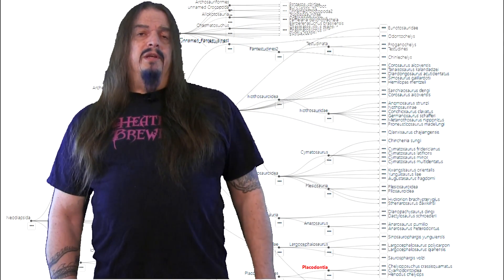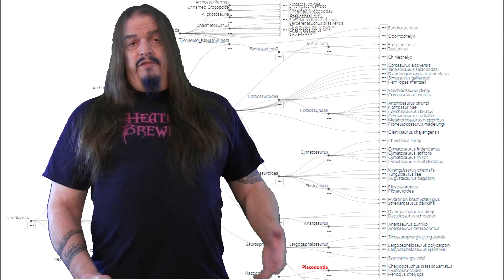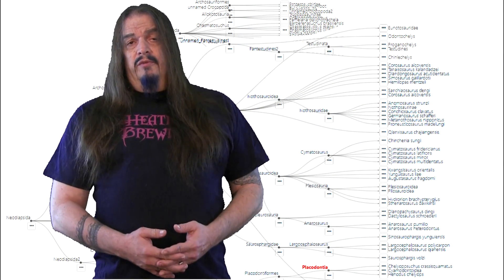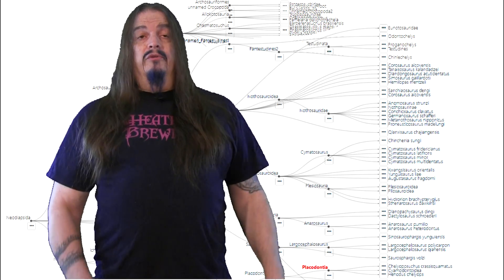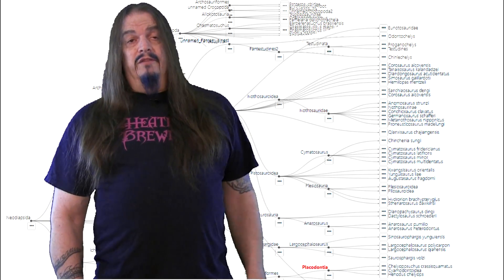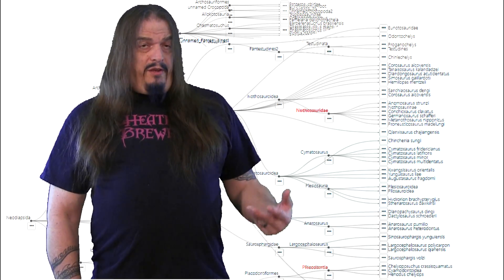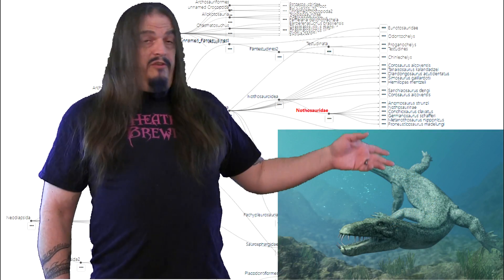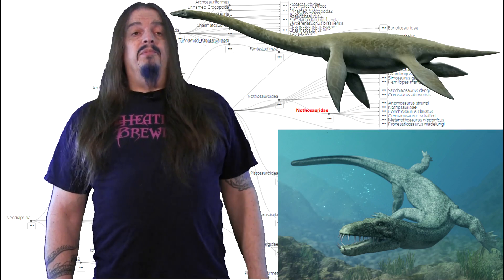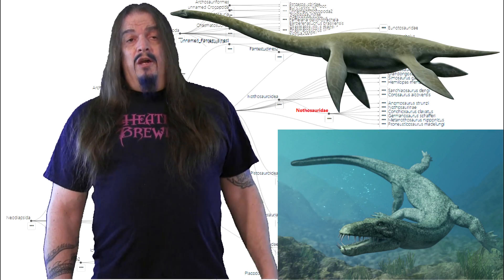Even in the Permian, we saw a few different lineages of reptiles returning to the sea, webbing their toes and turning their feet into flippers. Thus, in the early Triassic, we already have Nothosaurs — ancestors of the later Plesiosaurs.